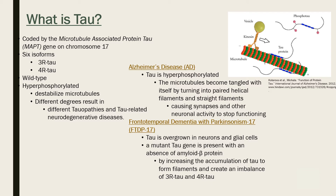The two diseases focused on in this research are Alzheimer's disease and frontotemporal dementia with Parkinsonism-17 (FTDP-17). In AD, tau is hyperphosphorylated, causing distorted microtubule function with the microtubules tangling with themselves. These tangles stop neurons from functioning properly. In FTDP-17, not only is tau overexpressed in neurons and glial cells, but a mutant tau causes an imbalance between the three-repeat and four-repeat tau isoforms. The mutant tau starts the onset of this disease and causes the most damage.